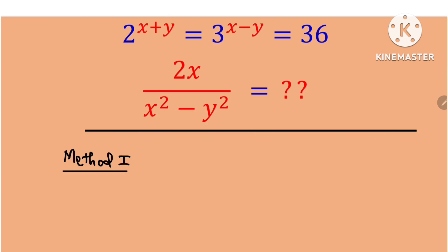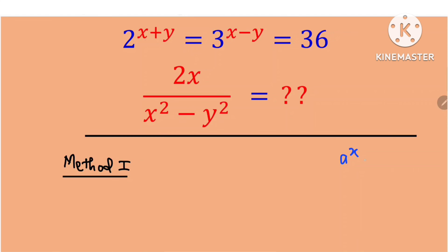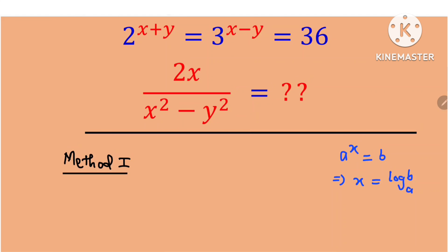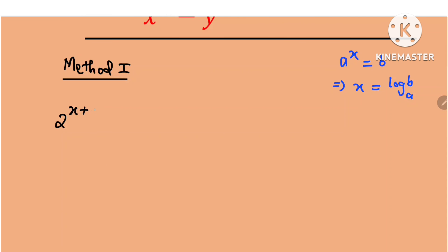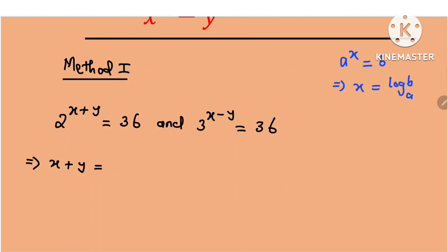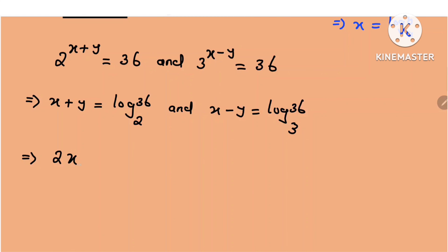Here, we are going to transform these two equations to logarithmic equations. Recall that if a raised to the power x is equal to b, then x is equal to the log of b to the base a. So in this question, we are given that 2 raised to the power x plus y is equal to 36, and 3 raised to the power x minus y is also equal to 36. This implies that x plus y is equal to log 36 to the base 2, and x minus y is equal to log 36 to the base 3. If you add these two equations, we obtain 2x equal to log 36 to the base 2 plus log 36 to the base 3.